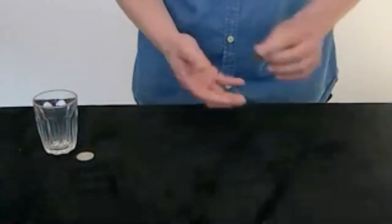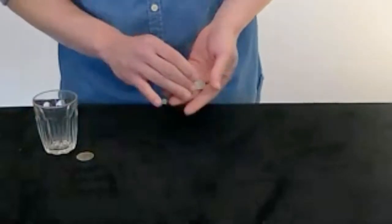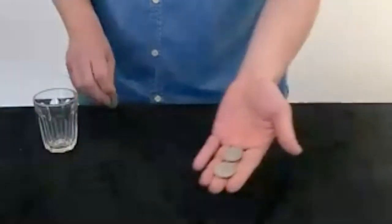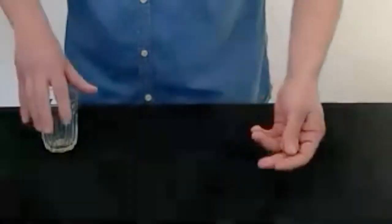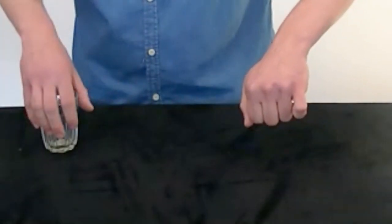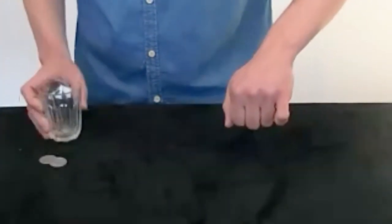We'll do it again because that's what you do with coin tricks, right? So two coins in your hand, one coin in the glass. Now watch, it flies through the air, lands in the glass. That's two with one left in your hand, right?